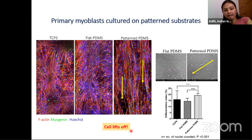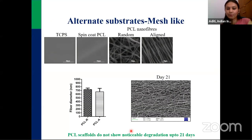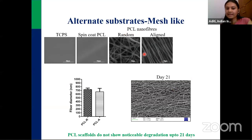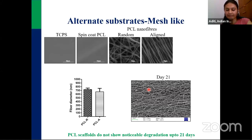We started thinking of making a mesh-like structure that could hold the cell or entangle it so it doesn't lift off from the surface. We made use of polymeric nanofibers — PCL — which is a biocompatible and slow-degrading polymer. We wanted it slow-degrading so we can culture cells as long as we want without the culture substrate itself dissolving away.